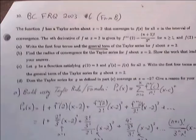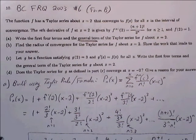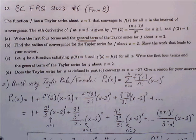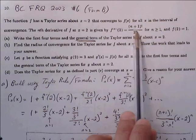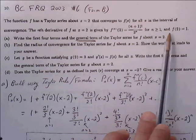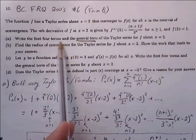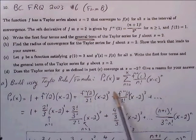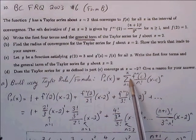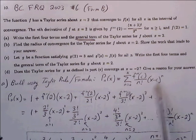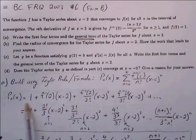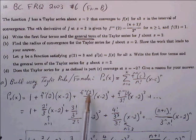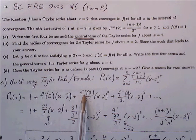Next, problem number 10. The function f has a Taylor series about x = 2 that converges to f(x) on its interval of convergence. The nth derivative satisfies f^(n)(2) = (n+1)! / 3^n for n ≥ 1, and f(2) = 1. For part A, write the first four terms and the general term of the Taylor series using our Taylor formula.